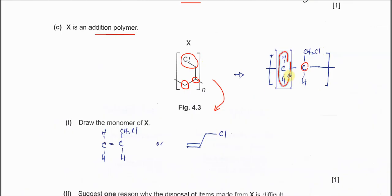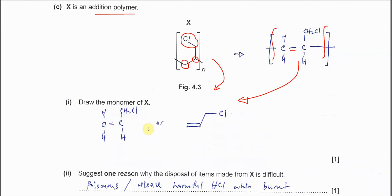As I told you, break this bond and add another bond between the carbons to get this monomer. To draw the monomer of X, you can get this one easily, or you can draw the skeleton form, which is the same.